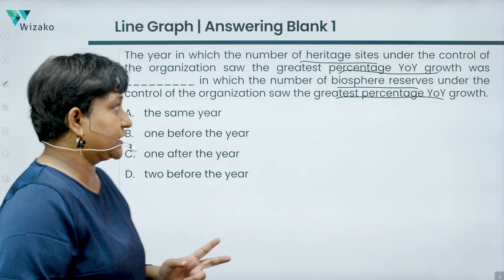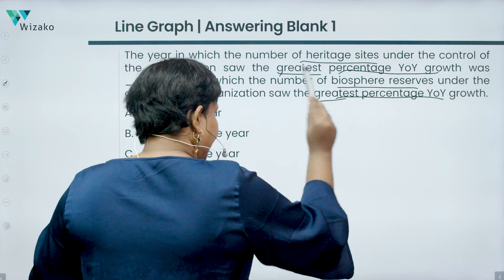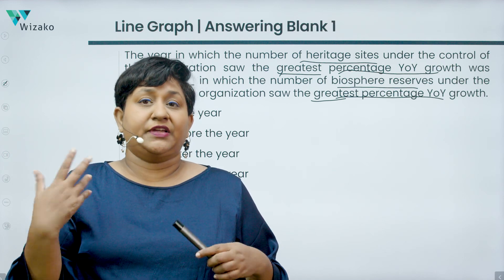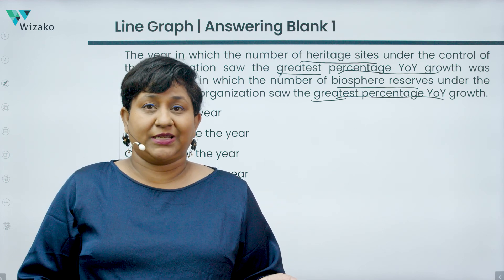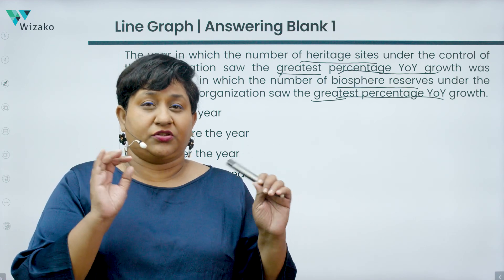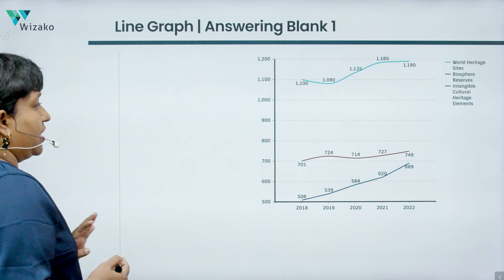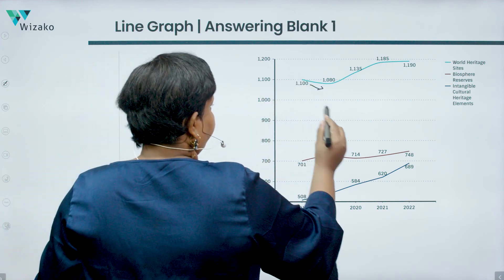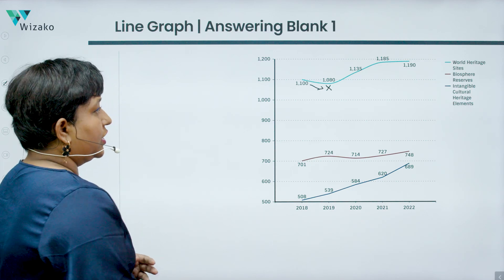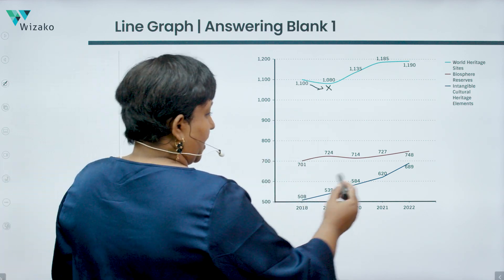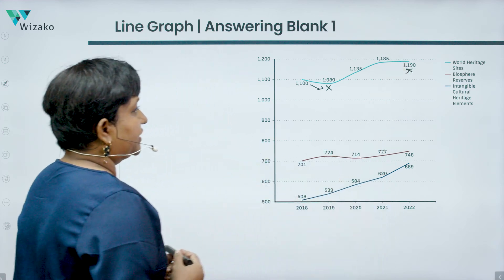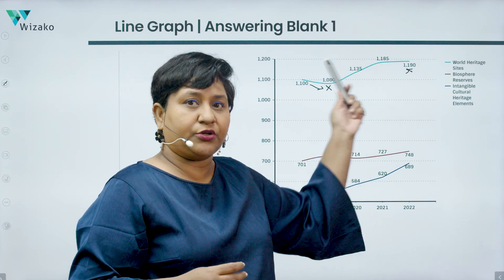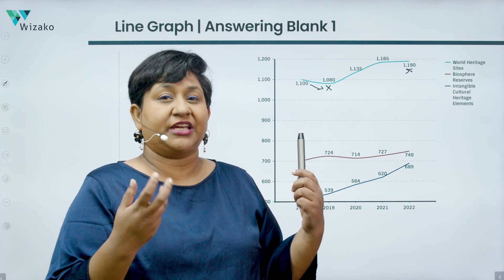We need to figure out the year of greatest percentage growth for heritage sites and for biosphere reserves. Always cross-verify — it doesn't always have to be greatest and greatest. Looking at world heritage sites, 2019 is a dip year so that's ruled out. 2022 is also not the year of greatest growth visually. So greatest growth likely happened in 2020 or 2021.